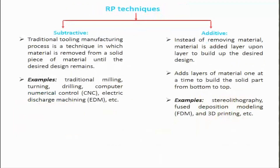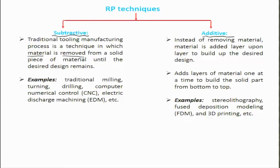Looking broadly at the kinds of techniques involved in rapid prototyping, there are either subtractive techniques — where you take out material — or additive techniques — where instead of removing material, you add layer by layer and build up the desired design. Traditional tooling and manufacturing processes involve mostly material removal from a solid piece until the desired shape or form is realized.